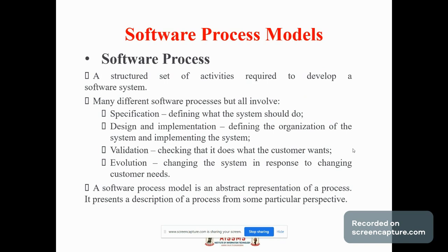There are different software processes. It involves specification, design and implementation, validation, and evolution. Specification means defining what the system should do. Design and implementation means defining the organization of the system and implementing the system. Validation means checking that it does what the customer wants. Evolution means changing the system in response to changing customer needs.